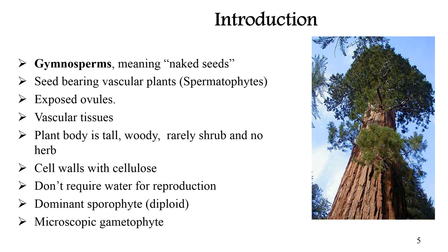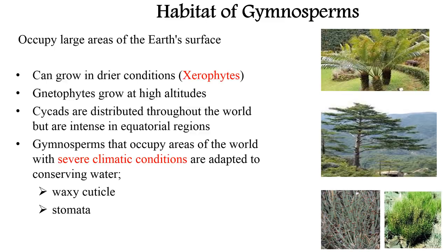The plant life cycle has two alternating phases: the dominant sporophyte, which is diploid, and the haploid phase called the gametophyte. In gymnosperms, the sporophyte is the dominant phase. Gymnosperms are found in a wide variety of habitats throughout the world. Some grow in dry conditions, so those plants are also called xerophytes. Some grow at high altitudes — for example, gnetophytes — whereas cycads are distributed throughout the world but are very dense in the equatorial region. Gymnosperms adapted to conserve water for two main reasons: their leaves are covered with a heavy waxy cuticle, and stomata are sunken below the leaf surface to decrease the rate of evaporation.